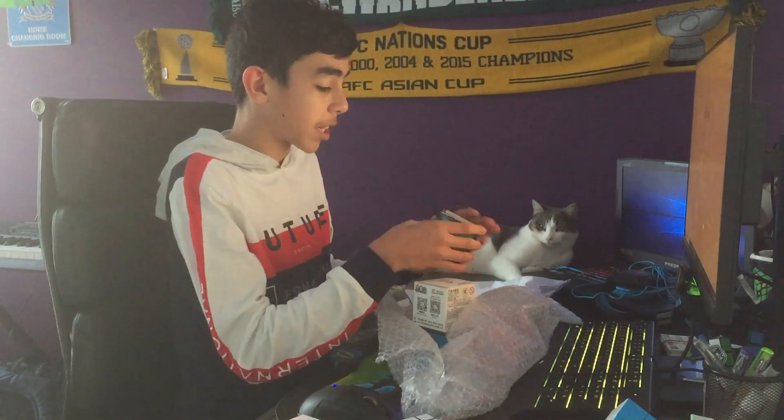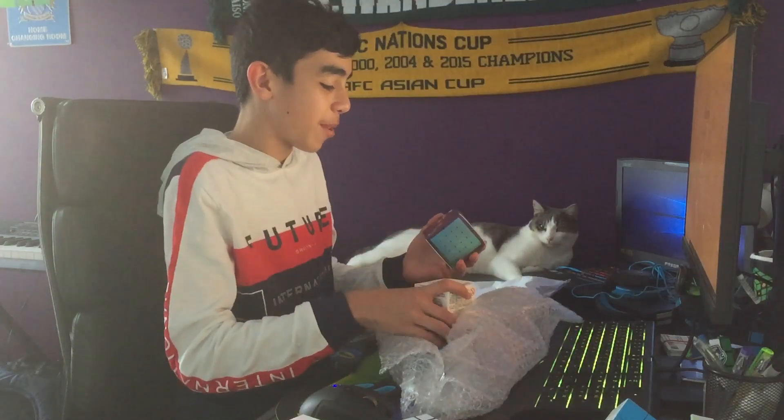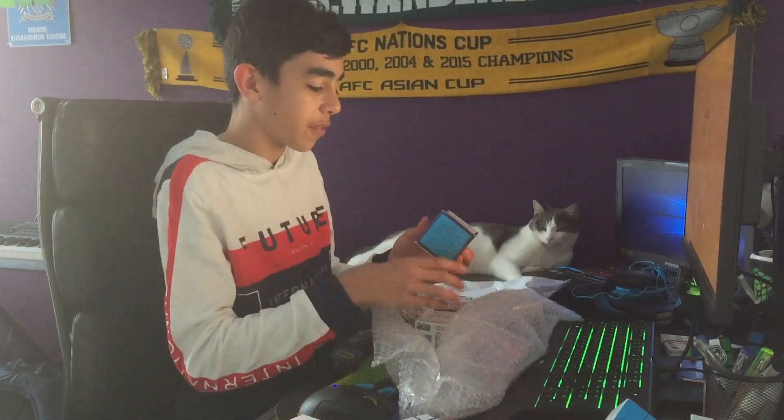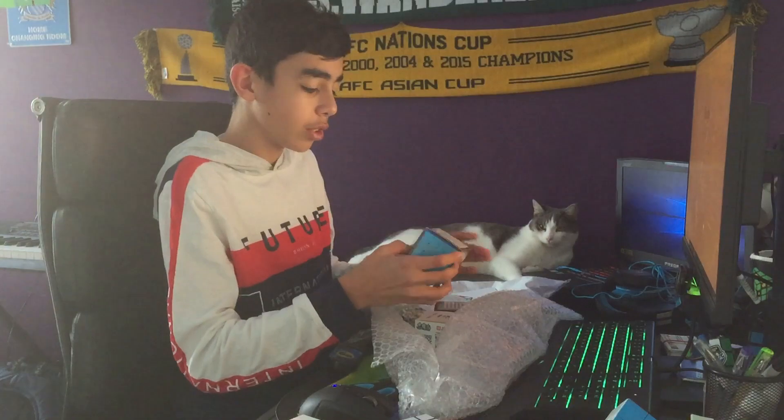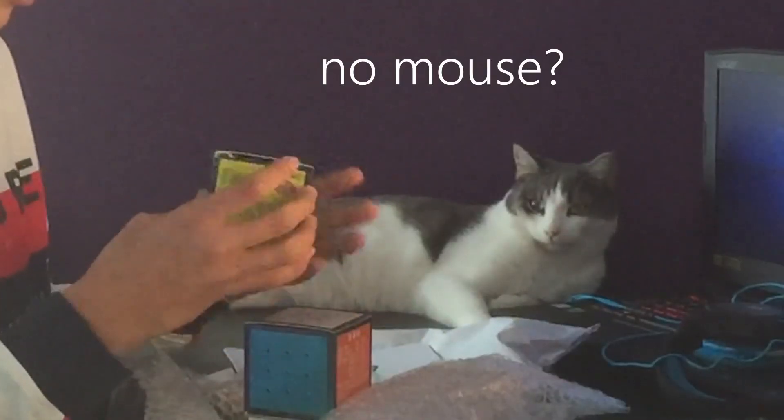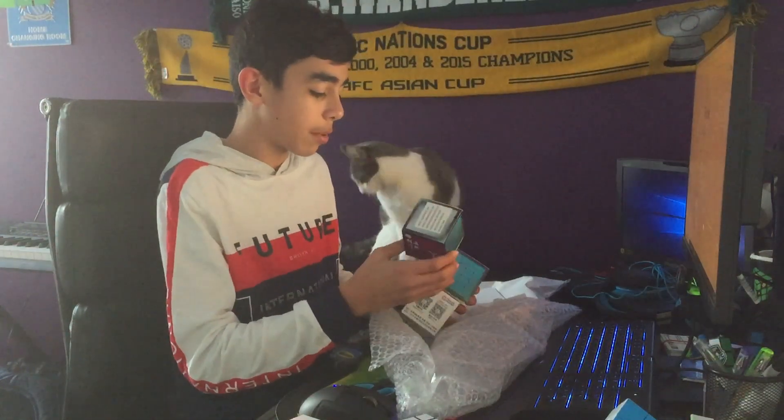We have a YuXin Little Magic M, so two magnetic 5x5s - oh no, this is a 5x5, this is a 4x4. So this is the YuSu I believe. They're all magnetic, okay that's cool. All magnetic cubes, two 5x5s and a 4x4.